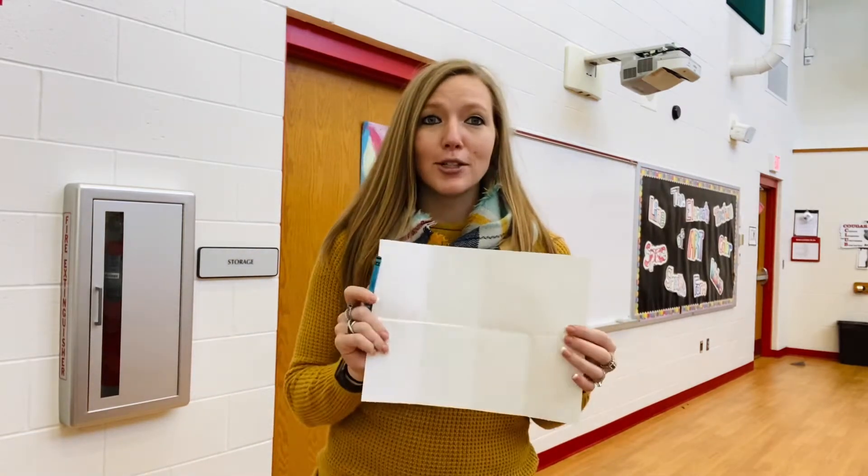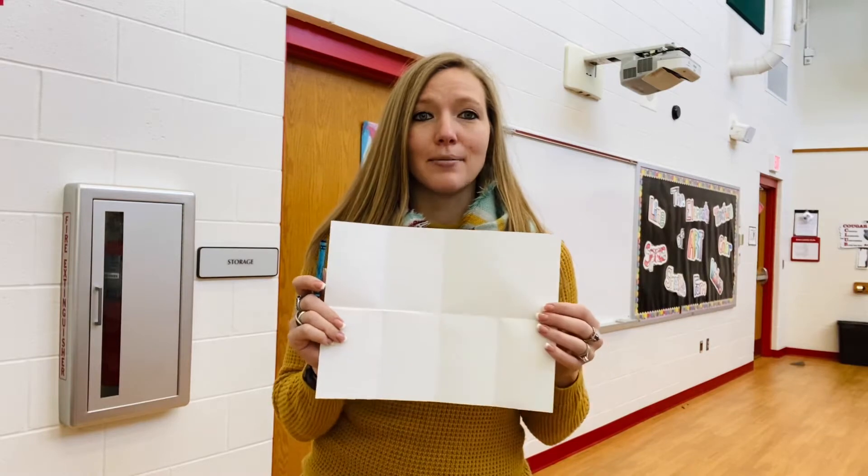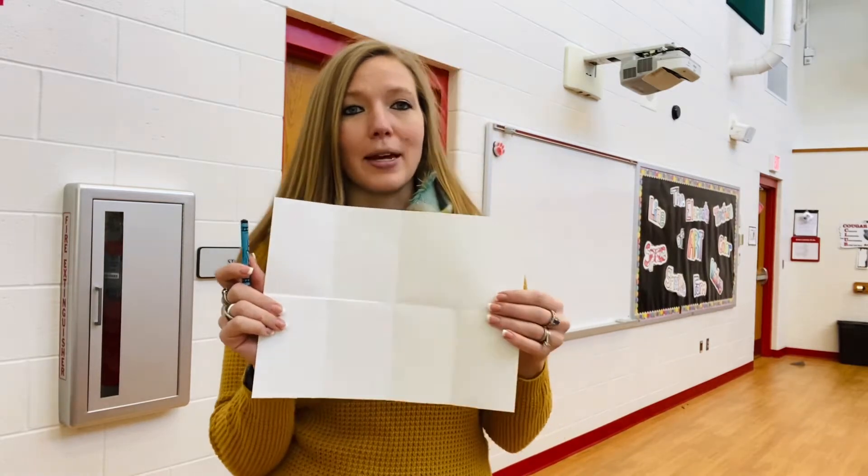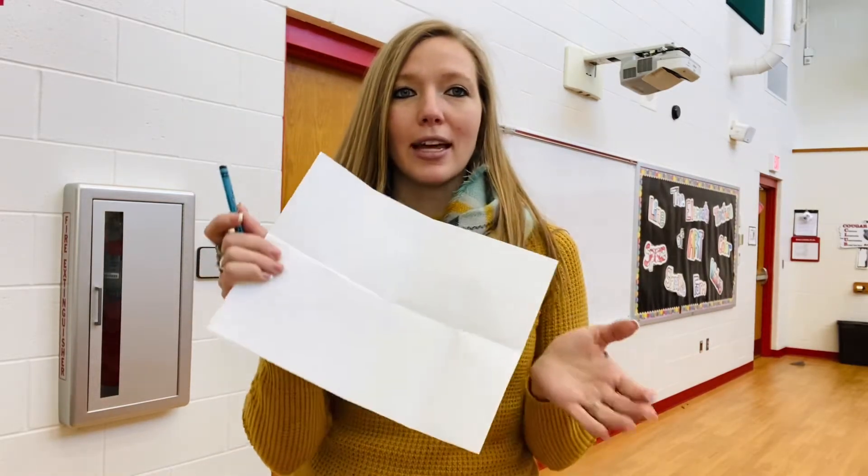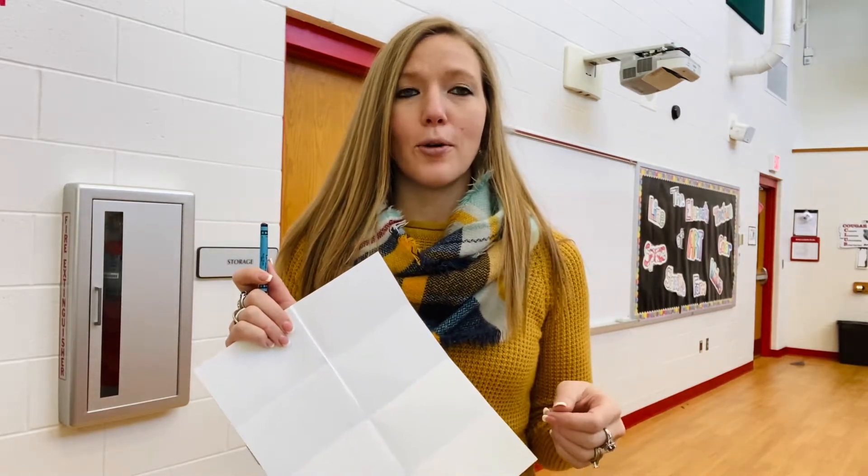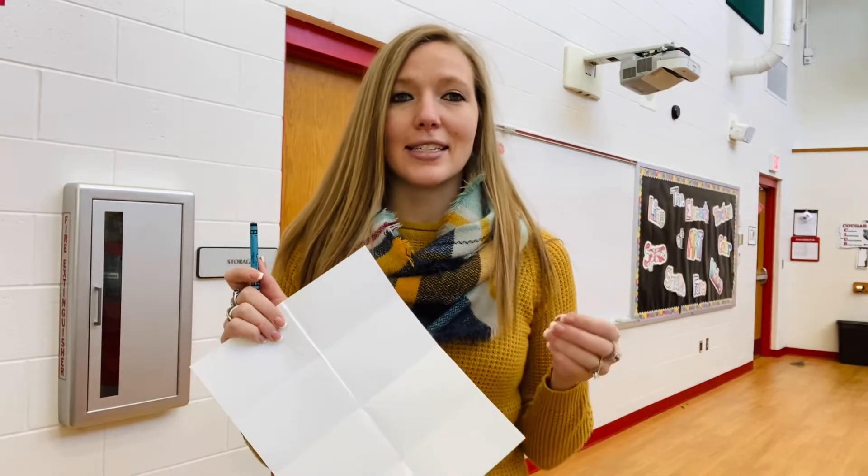So I'm going to search around my room and try to find some textures by doing a texture rubbing. So what that means is I'm going to lay my paper onto the surface or object that I find that I think has texture to it. And then I'm going to take my crayon and I'm going to rub over top of it.